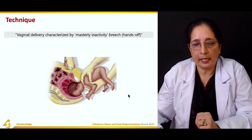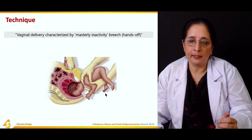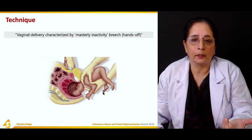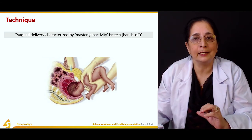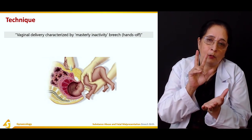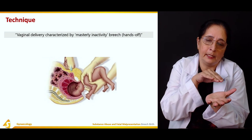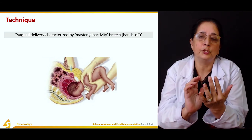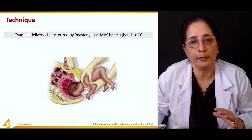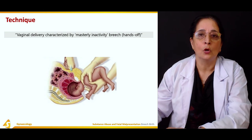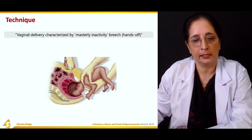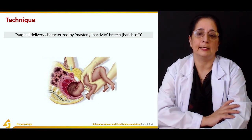As shown in the diagram, once the umbilicus comes out, the obstetrician grasps the baby with one hand under, holding the baby in the hand, and then tries to keep the head of the baby flexed. This avoids hyperextension, which can lead to complications of breech delivery.